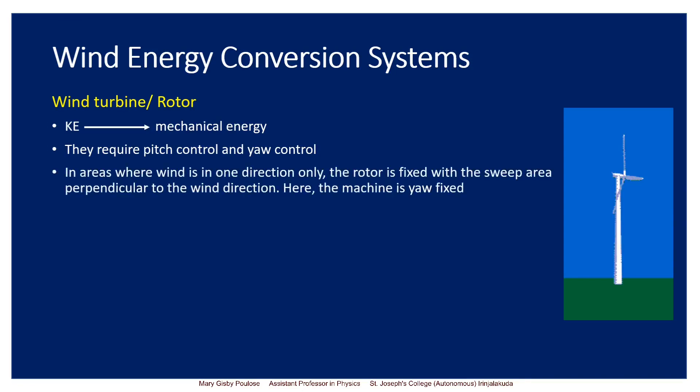In areas where wind is in one direction only, the rotor is fixed and the sweep area is perpendicular to the wind direction — hence the machine is yaw fixed. In particular places such as along mountain slopes, the wind will always be in one direction. There we can fix the angle of the rotor, and the yaw movement is fixed, so the machine is said to be yaw fixed.